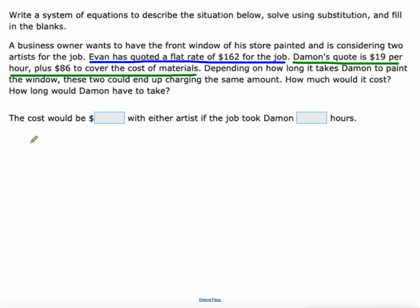Let's write a system of equations. We'll write an equation for Evan here. Evan's flat rate is $162. It does not depend on the number of hours. Meanwhile, Damon, his cost y is $19 per hour plus $86.